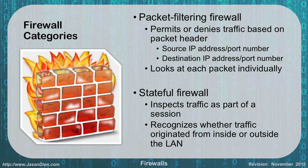There are two big categories of firewalls: packet filtering and stateful firewalls. Packet filtering is based entirely on the packet header — it permits or denies traffic based on what's inside that header, looking at the source IP, source port, destination IP, and destination port. We can block things based on port number, IP address, or both. It examines every single packet individually — a very broad approach based on port and IP.